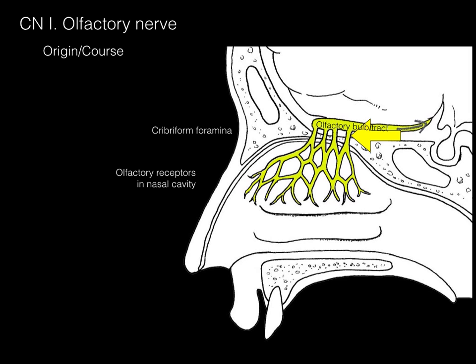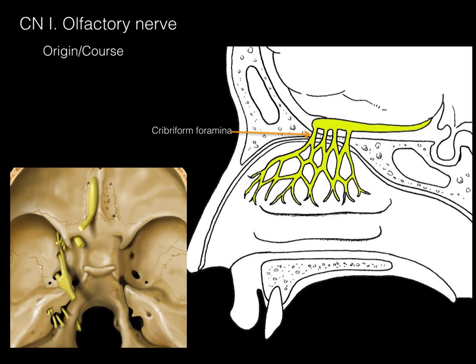Neurons then synapse in the olfactory bulb and tract, and send the information to the brain to allow you to smell. This is actually an extension of the telencephalon — an extension of the forebrain. In the bottom left picture, you can see the cribriform foramina in the mid-sagittal illustration, with the olfactory bulb on one side and the cribriform foramina on the other.